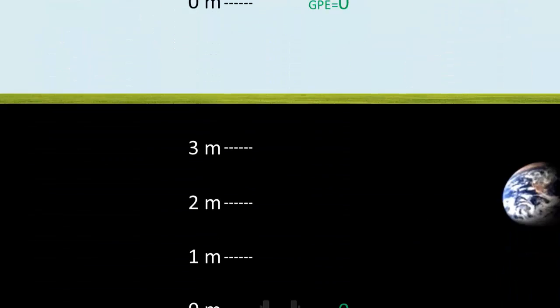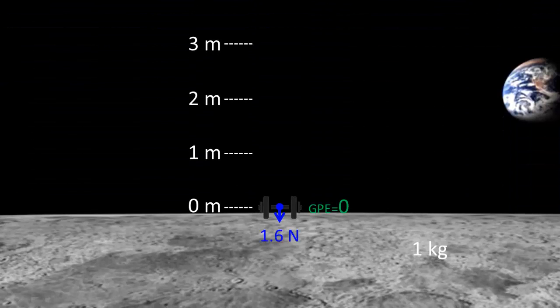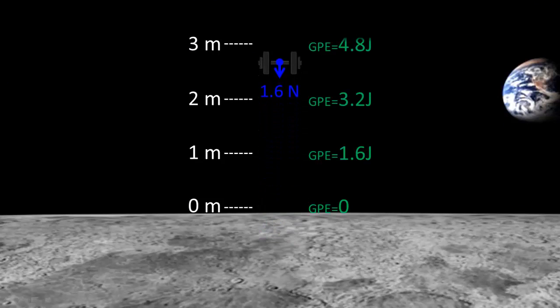On the surface of the Moon, the gravitational force will only be about 1.6N. For every 1m moved up, the mass gains only 1.6 joules of GPE.